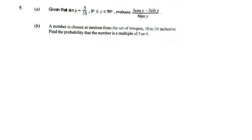Let's take question 5, part A. Given that sine y is equal to 5 over 13, where 0 degrees is less than or equal to y is less than or equal to 90 degrees, evaluate the fraction 3 cos y minus 2 sine y, all divided by 6 tan y.